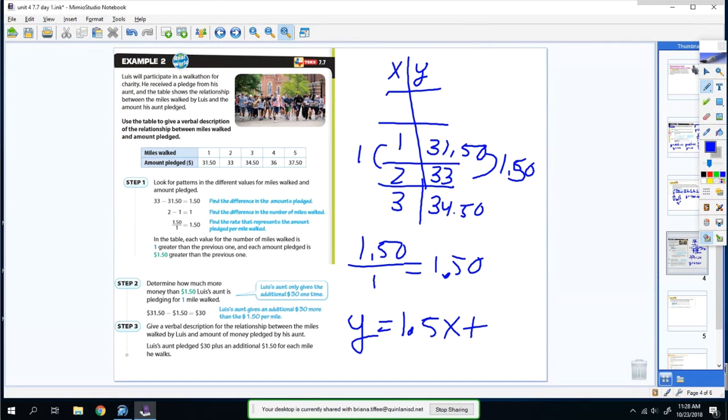So if I go down 1, I should subtract $1.50. So this will become $30. It means before I even started the walk, I had $30. So this would be 30.